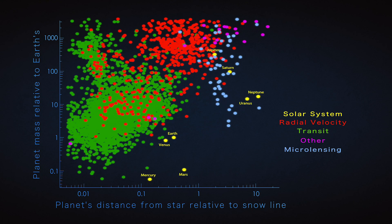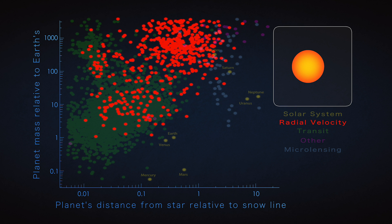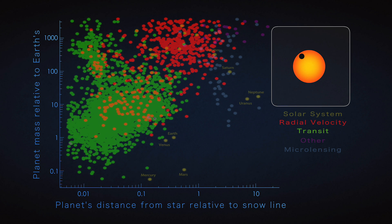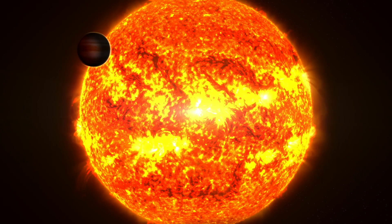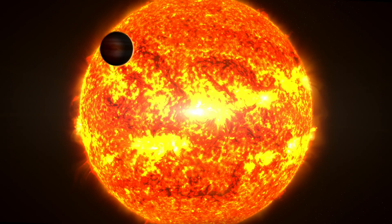Each method of finding exoplanets has different strengths. Radial velocity measurements reveal planets by detecting how they cause the star to move. Transit measurements reveal dips in starlight caused by planets passing in front of their stars. Both work best for massive planets in close orbits and for stars up to hundreds of light-years away.